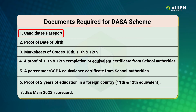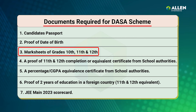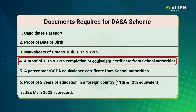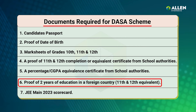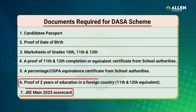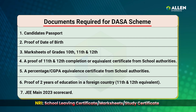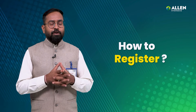Required documents include: the candidate's passport, proof of date of birth, mark sheets of grades 10th, 11th and 12th, a proof of 11th and 12th completion or equivalent certificate from school authorities, a percentage or CGPA equivalent certificate, proof of 2 years of education in a foreign country (i.e., 11th and 12th completion), and JEE Main 2023 scorecard. In case you are an NRI, you also need to submit a school leaving certificate, mark sheets, or study certificate as given in the brochure.